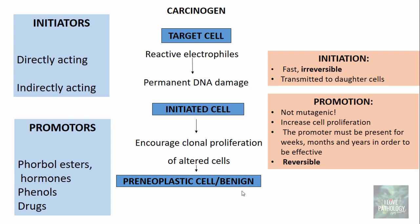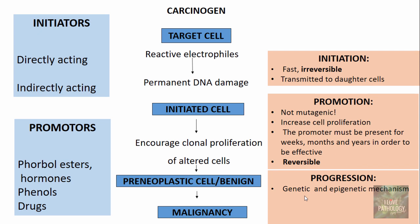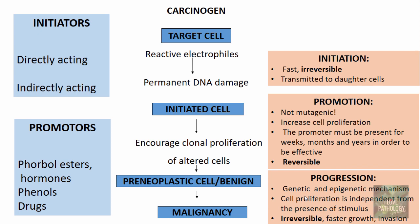These preneoplastic benign clones of cells will eventually turn into malignancy, and this process is known as progression. In progression, with a lot of clonal proliferation, there is more and more mutation and damage. Through genetic and epigenetic mechanisms, the benign clone progresses to a malignant clone of cells. Cell proliferation becomes independent of the stimulus and this is irreversible — there are features of invasion, metastasis, and faster growth.